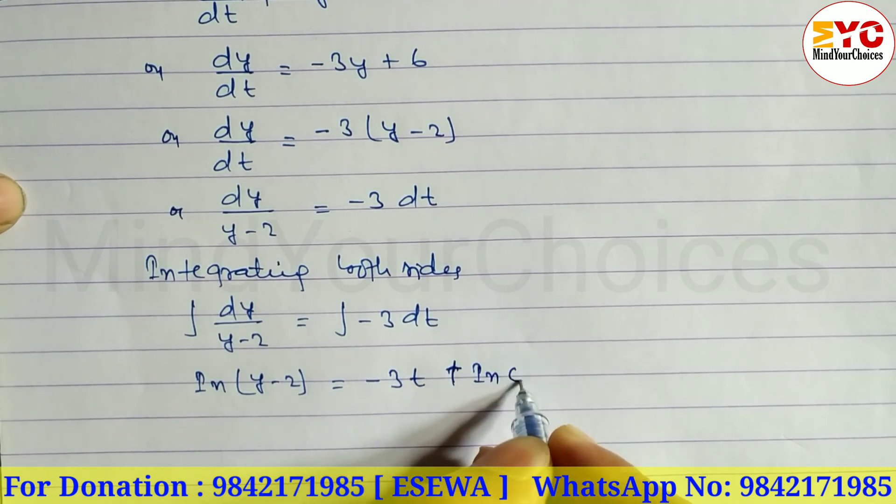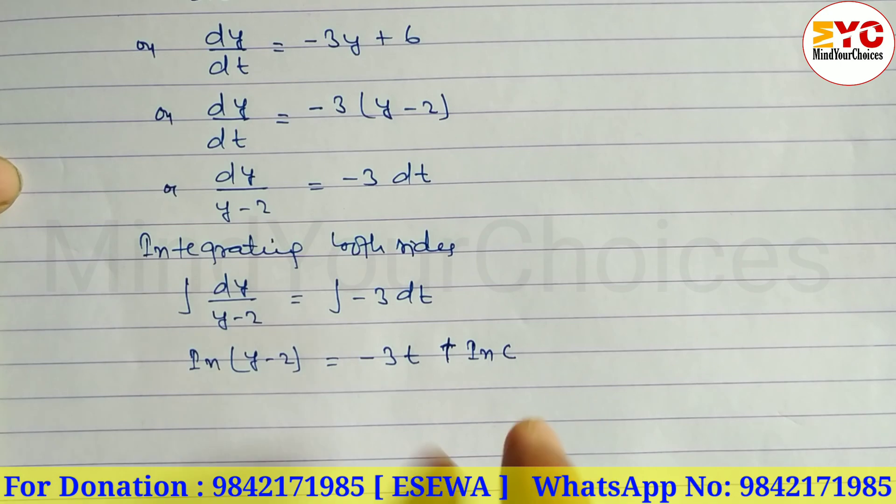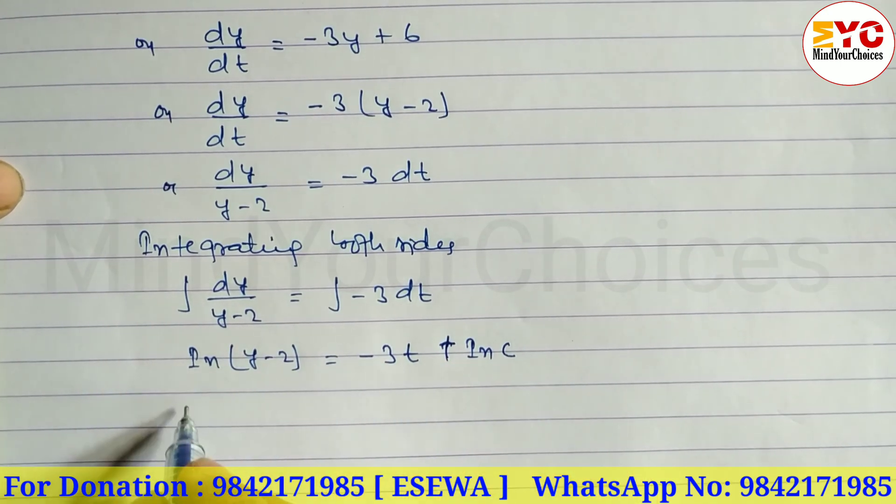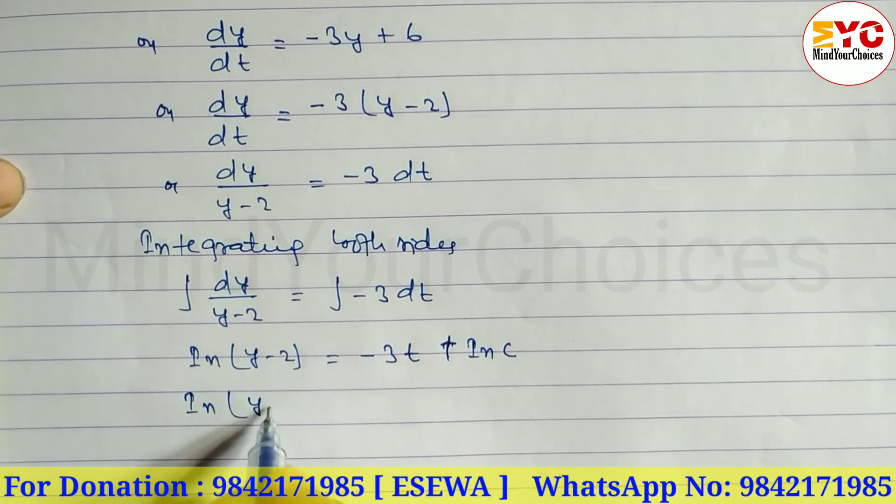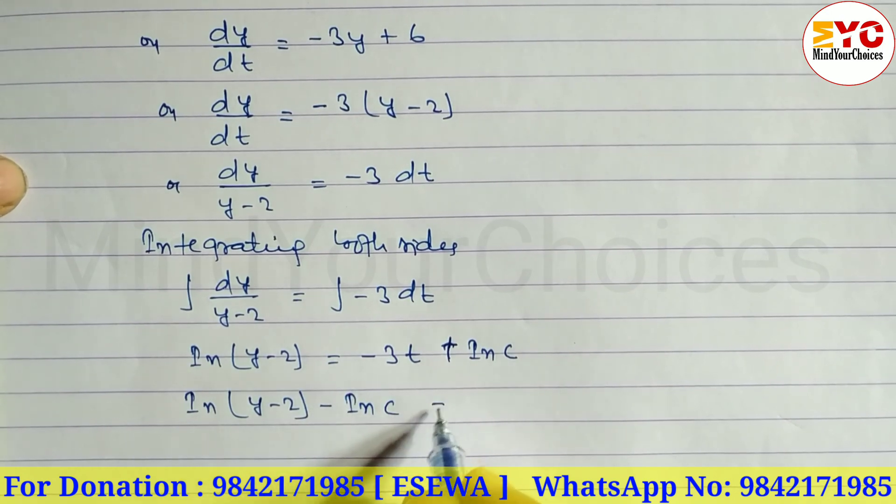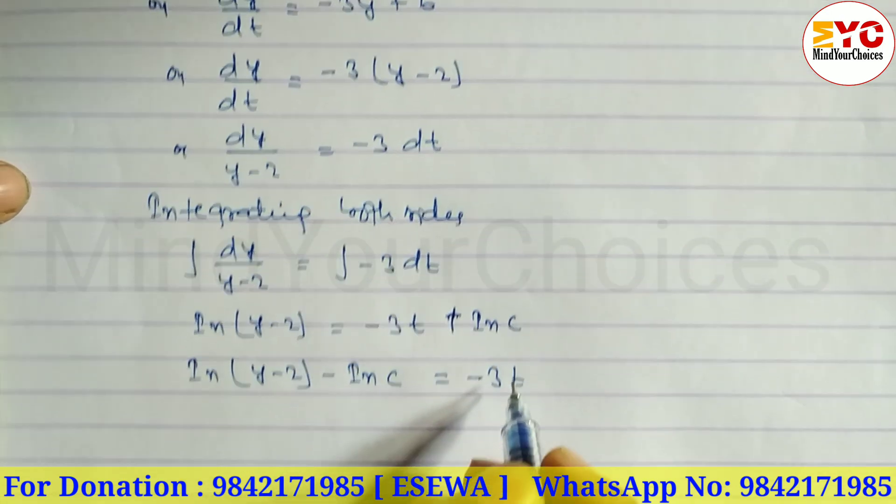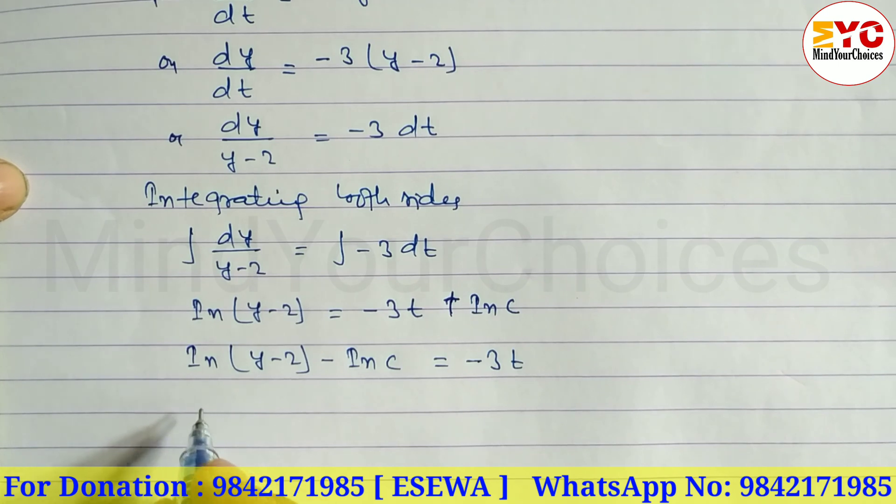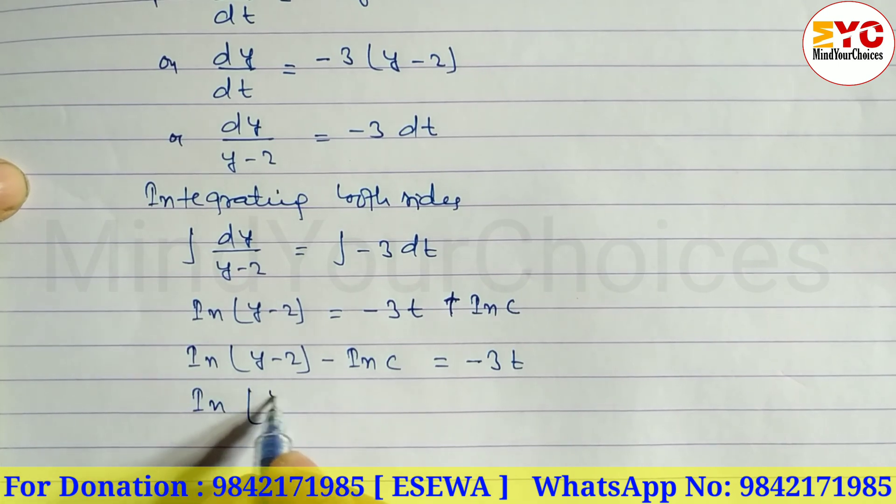Now bringing ln c to the left side: ln(y-2) minus ln c equals minus 3t. Using logarithm division property: ln((y-2)/c) equals minus 3t.